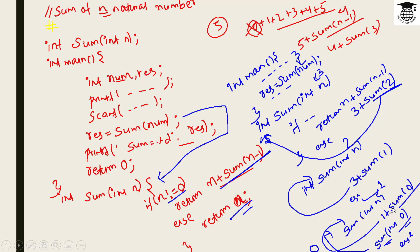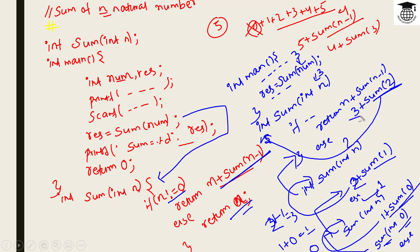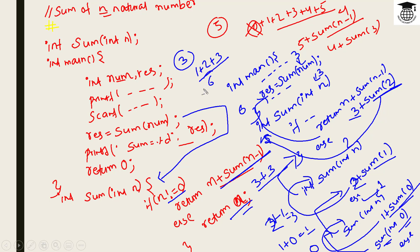When n reaches 0, return 0. Then 1 plus sum(0) returns 1 plus 0. The return value is 1. Then 2 plus sum(1) returns 2 plus 1 equals 3. Then 3 plus sum(2) returns 3 plus 3 equals 6. So the result is 6, which is the sum of 3 natural numbers: 1 plus 2 plus 3 equals 6.